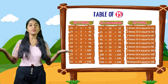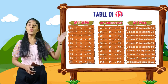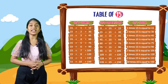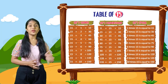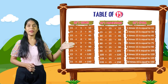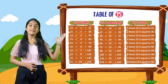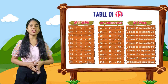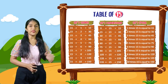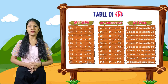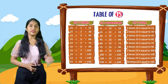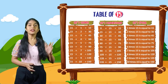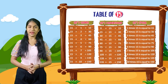So now let's speak out. You have to speak out with me. 1 times 15 is equal to 15. 2 times 15 is equal to 30. 3 times 15 is equal to 45. 4 times 15 is equal to 60. 5 times 15 is equal to 75. 6 times 15 is equal to 90. 7 times 15 is equal to 105. 8 times 15 is equal to 120. 9 times 15 is equal to 135. 10 times 15 is equal to 150.